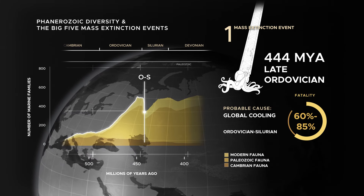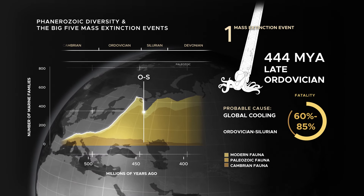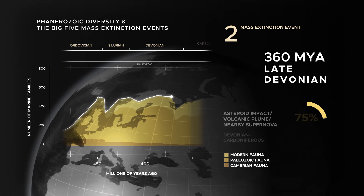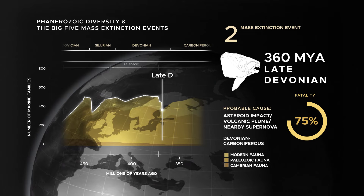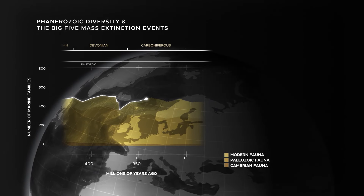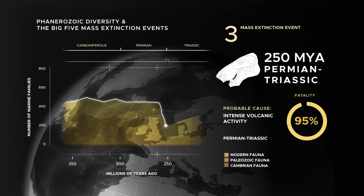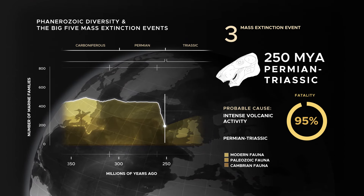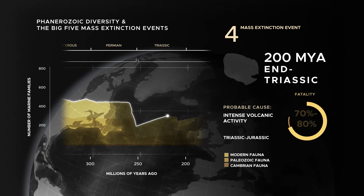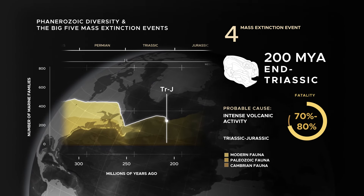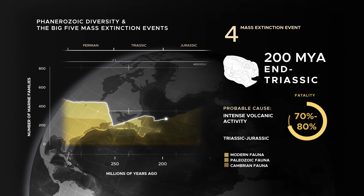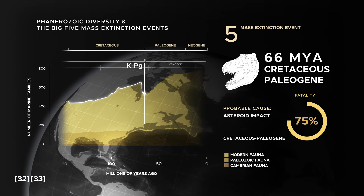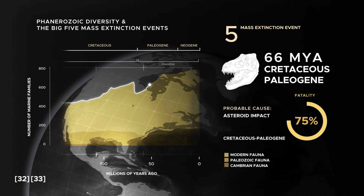The first one, 444 million years ago, was the late Ordovician extinction event. The second one, 360 million years ago, was the late Devonian. The third and most severe one was the Permian-Triassic extinction event, 250 million years ago. The fourth one, the end Triassic, 200 million years ago. And the fifth and most well known, the Cretaceous-Palaeogene extinction event — the end of the dinosaurs — 65 million years ago.